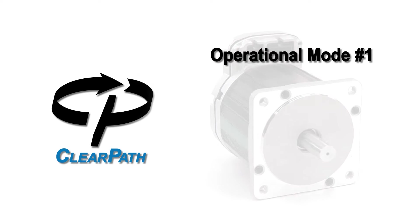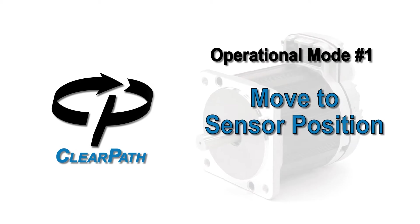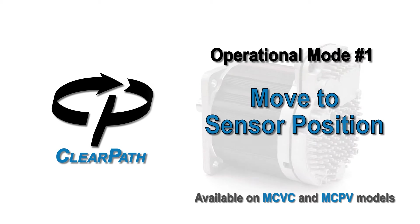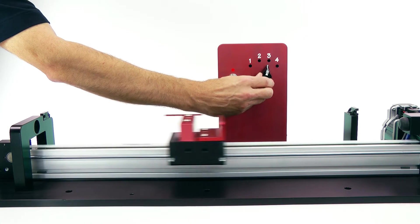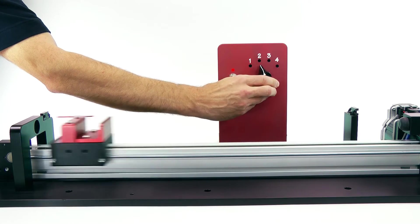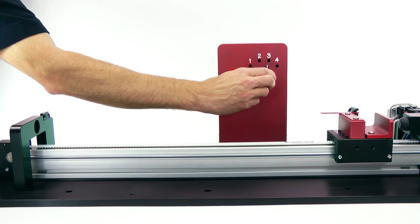ClearPath Operational Mode 1: Move to Sensor Position. Move to Sensor Position is the mode to use when you want to smoothly move back and forth between two positions that are defined by sensors or switches.